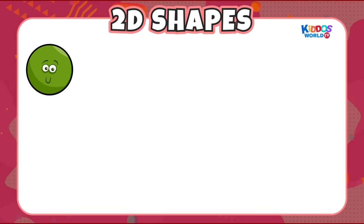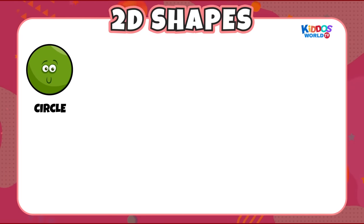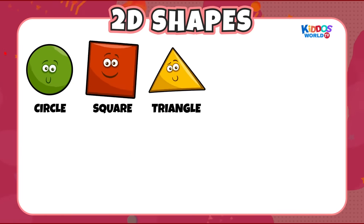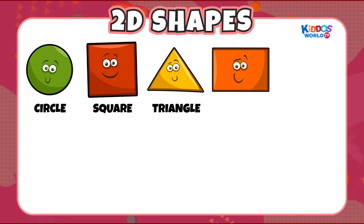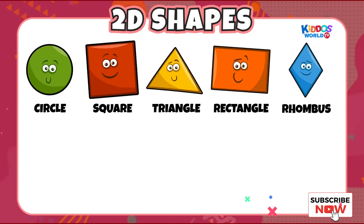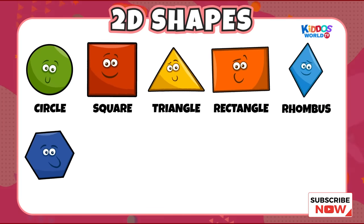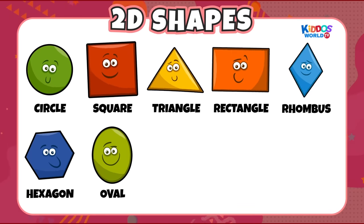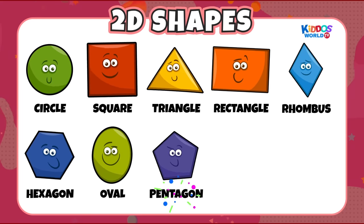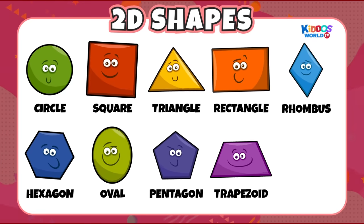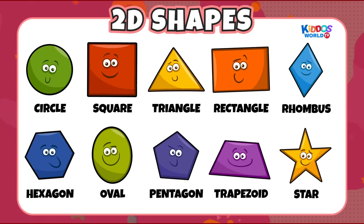Here are different shapes we should learn about — 2D shapes! Circle. Square. Triangle. Rectangle. Rhombus. Hexagon. Oval. Pentagon. Trapezoid. Star.